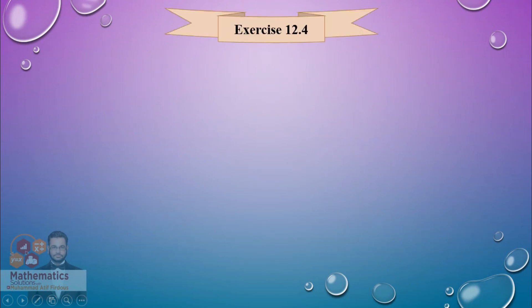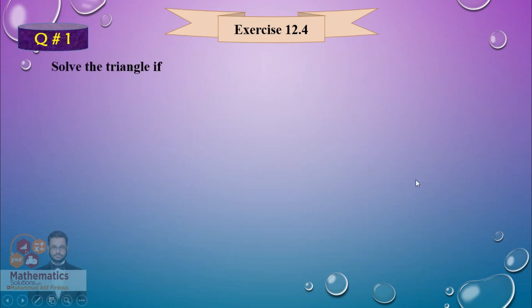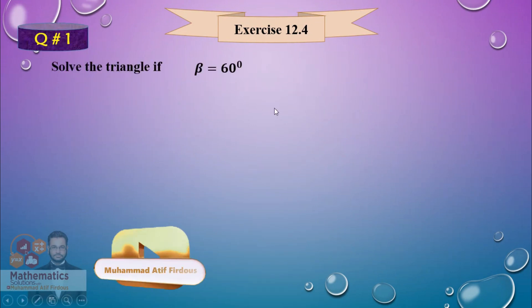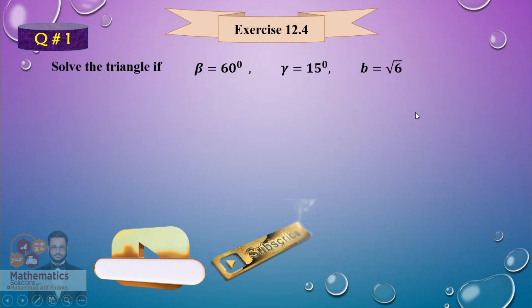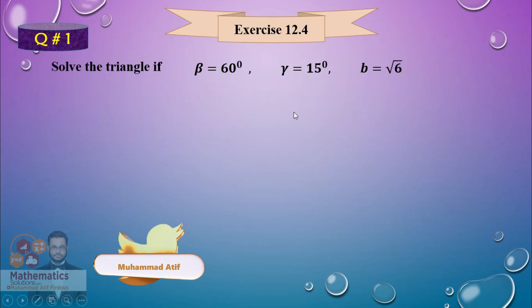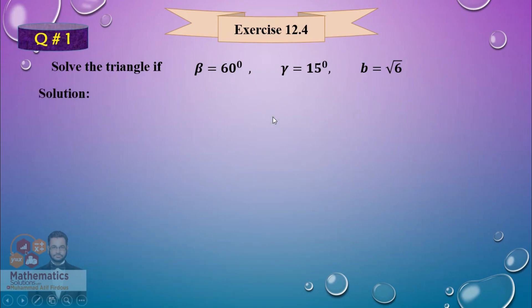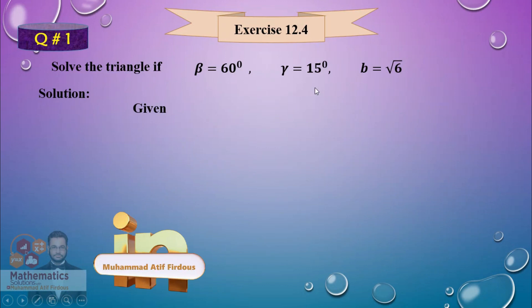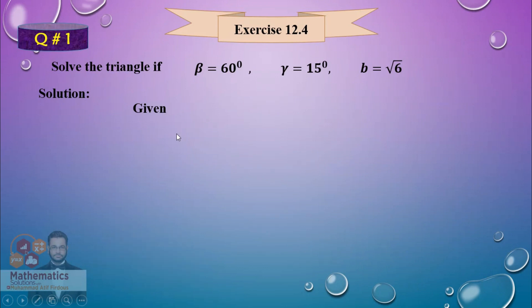I will start a question and you will understand. In the smart syllabus, question number one is: solve the triangle if beta = 60°, gamma = 15°, and side b = √6. So two angles and one side are given — you have to solve the triangle.